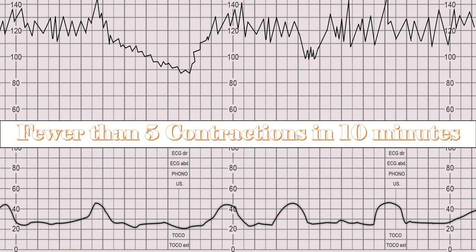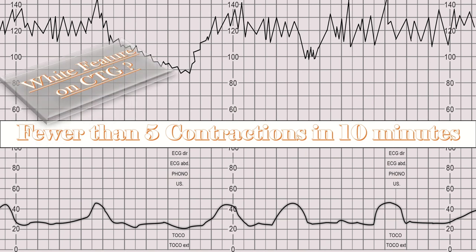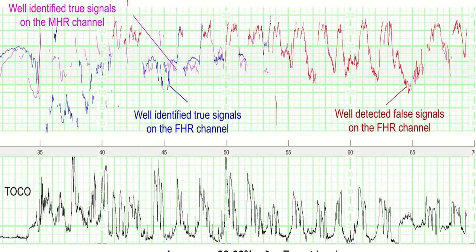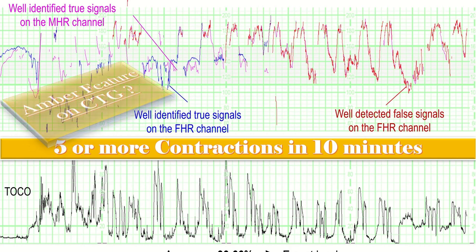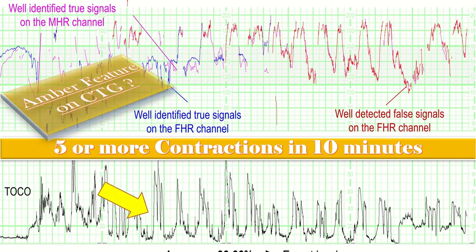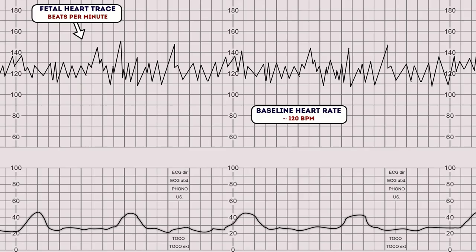When we count the contractions on CTG, if we have fewer than five contractions in 10 minutes, that is included in the white feature. On the other hand, if we have five or more contractions in 10 minutes leading to reduced resting time between contractions or hypertonus, that is included in the amber feature.